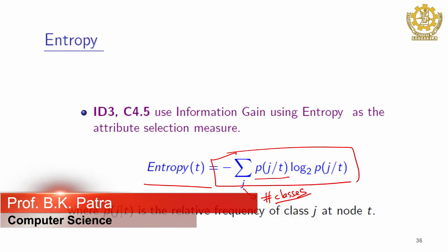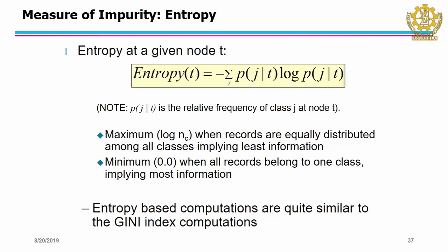Now, what will be the maximum value of the entropy? When all objects have equal probability to be in any class, that is equal probabilities. What will be the minimum value? If all patterns belong to a single class, then p(j,T) will be 1 and therefore entropy will be 0. The maximum value occurs when each class is equally probable.